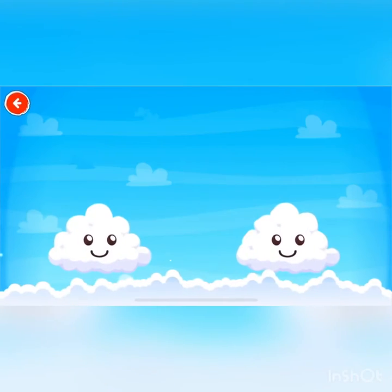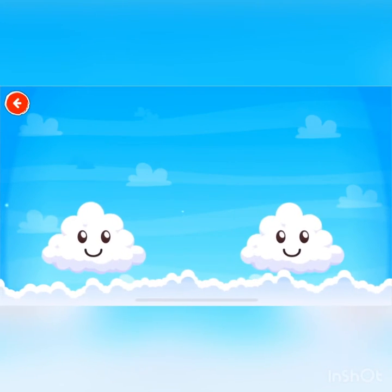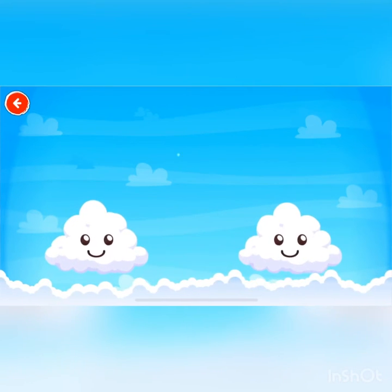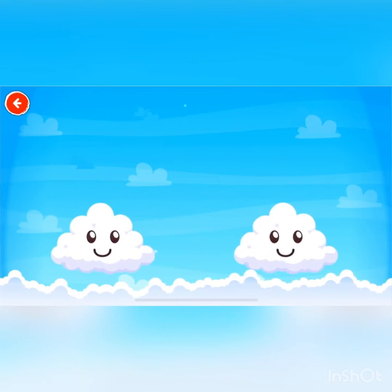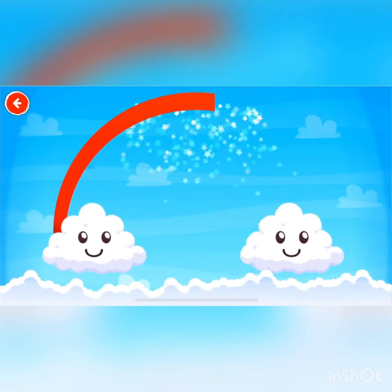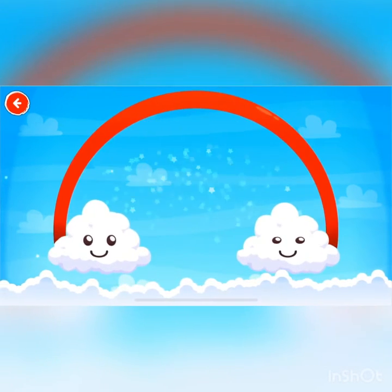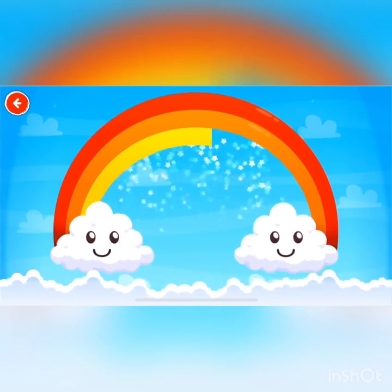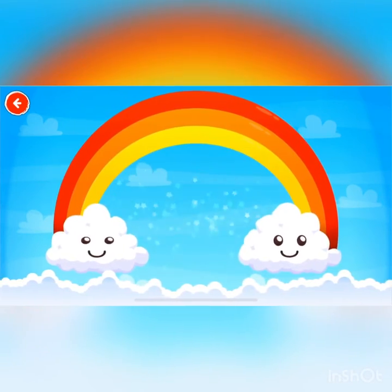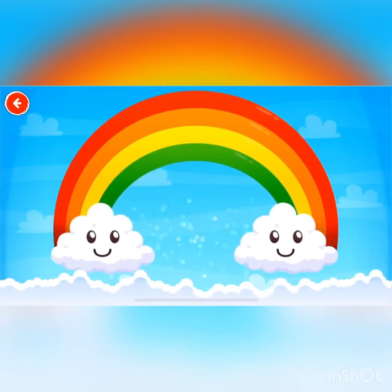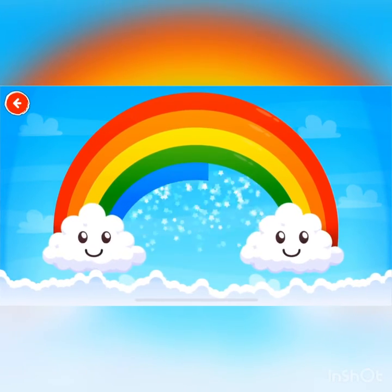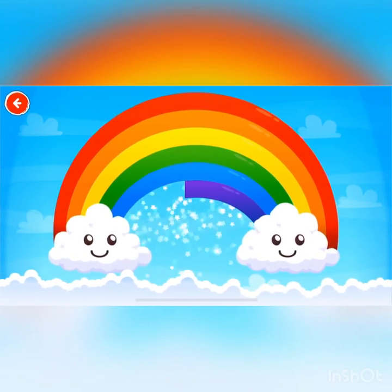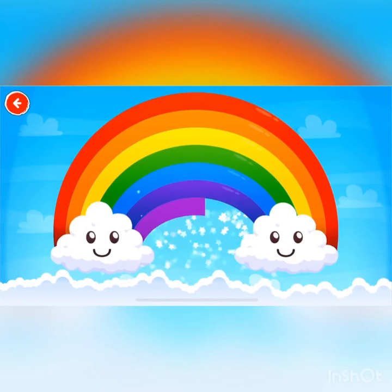Learning colors of the rainbow. You can learn colors from the rainbow. Red. Orange. Yellow. Green. Blue. Indigo. Purple.